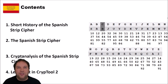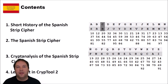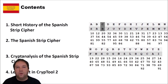Hello and welcome to a new video on the Cryptography for Everybody channel. In today's video we will have a look at the Spanish Strip Cipher, which was a hand cipher used during the Spanish Civil War. We will look at how this cipher works and how we can break it.